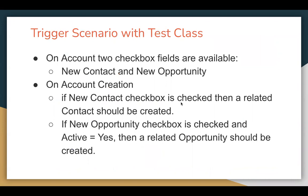Let's understand the trigger scenario. On account, there should be two checkbox fields — one is New Contact and one is New Opportunity. On account creation, if the New Contact checkbox is checked, then a related contact should be created automatically. If the New Opportunity checkbox is checked and Active equals to Yes, then a related opportunity should be created. If both are checked, then both contact and opportunity should be created. This is the trigger scenario we need to implement along with its test class implementation.